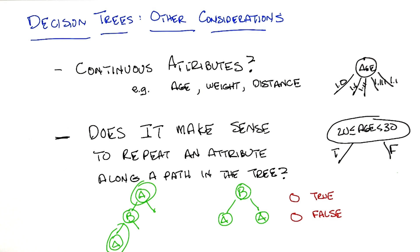Okay, Michael, what's the answer? So, all right, does it make sense to repeat an attribute along a path in a tree?